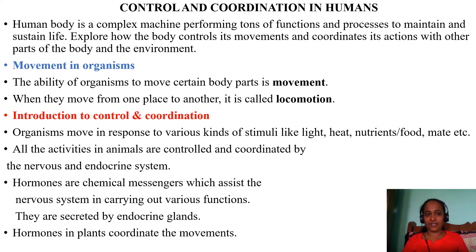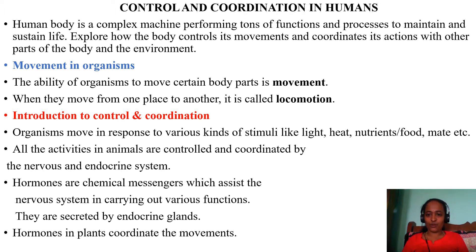Now, let us see movements in organisms. What is movement? The ability of an organism to move certain body parts is called movement. For example, lifting my hand or talking — these are all movement. What is locomotion? When an organism moves from one location to another, it is called locomotion. So there is a difference between movement and locomotion.